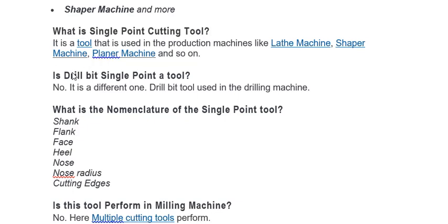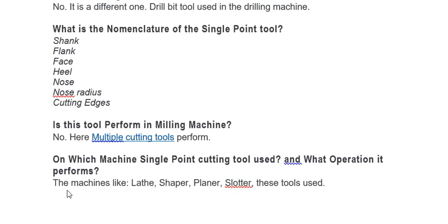Is a reamer a single point cutting tool? No — a reamer is a multi-point cutting tool used for reaming operations in a reaming machine. The nomenclature of the single point cutting tool includes: shank, flank, face, heel, nose, nose radius, and cutting edge. Single point cutting tools are not used in milling machines — only multi-point cutting tools are used there. Single point cutting tools are used in lathe, shaper, and planer machines for operations such as turning, facing, grooving, parting, and so on.